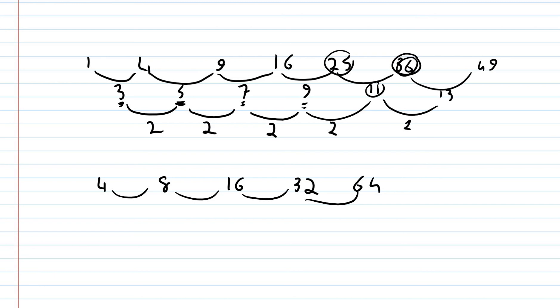We could have 4, 16, 64, 256. And where's the pattern there? Well, again, it might not be immediately obvious. But look at this. 4 to the power of 1 is 4. 4 to the power of 2 is 16. 4 to the power of 3 is 64. 4 to the power of 4 is 256. So there's loads of different type of patterns.